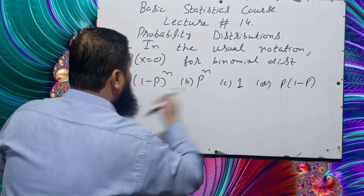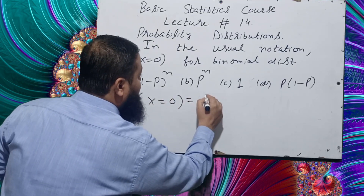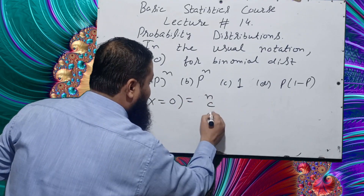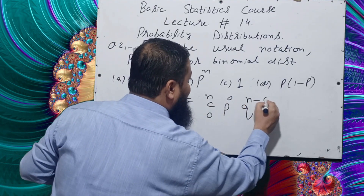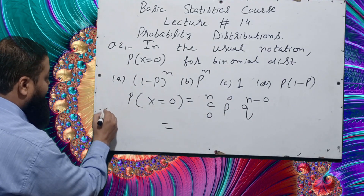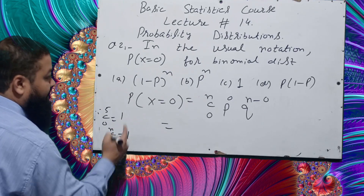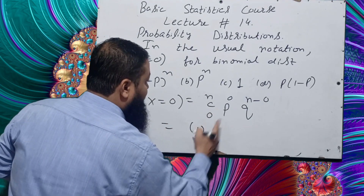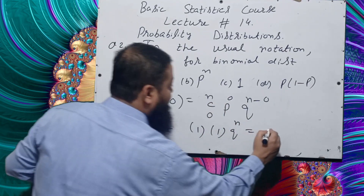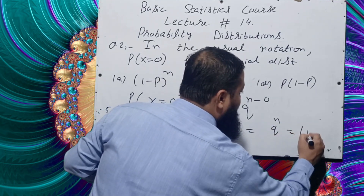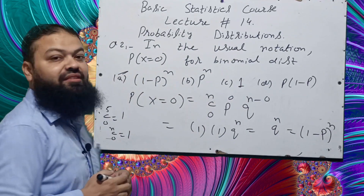Question number two: in the usual notation, what is P(X = 0) for the binomial distribution? We know P(X = 0) = nC0 × P^0 × Q^(n−0). Since nC0 = 1 and P^0 = 1, this simplifies to Q^n, which equals (1 − P)^n. So option A is the correct answer in the exam.